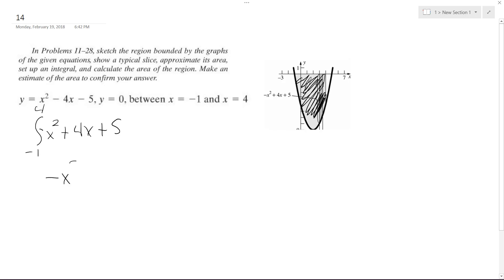So what we end up with is negative x cubed over 3 plus 2x squared plus 5x and we're integrating from negative 1 to 4.